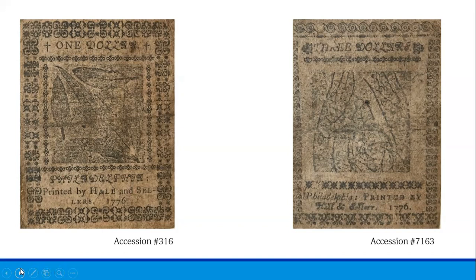Another factor that contributed to massive depreciation was the British. Recognizing an opportunity with the mass printing of currency underway, the British began a campaign of economic warfare by counterfeiting continentals on an extremely large scale. Their rationale was simple: if Americans could not pay soldiers and could not purchase supplies, it would put the economy in shambles. By undermining the economy, the British would also undermine the American Congress, with the hope that Americans would lose faith in Congress and realize the war could not be won.